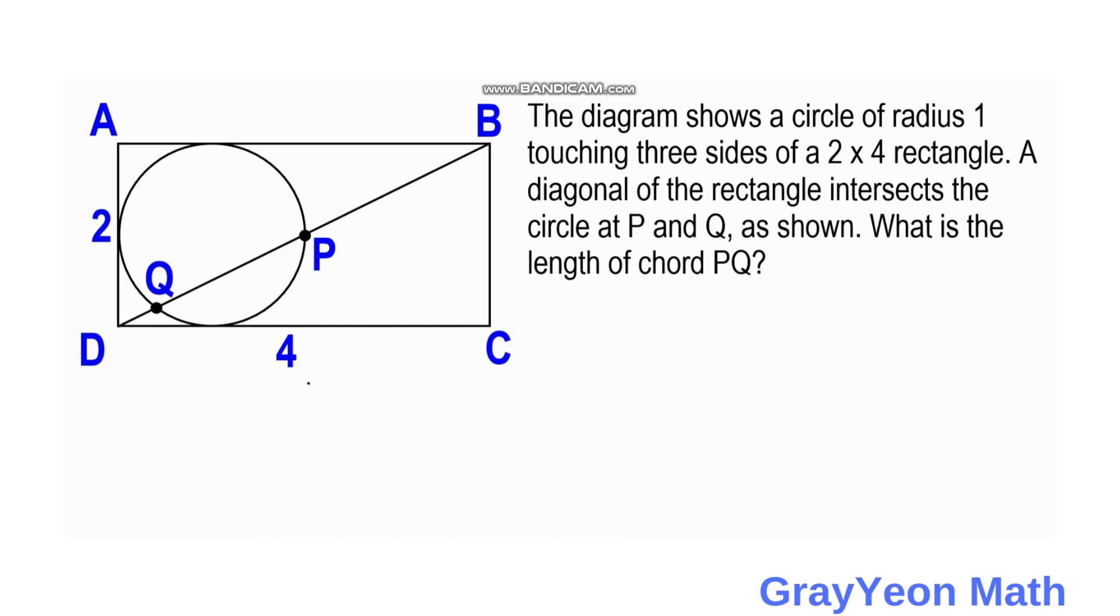First thing we have to do is draw a line from point P towards the left leg of this rectangle. Since the diameter of this circle is 2, and this is actually half of the length of this rectangle, this line cuts through the center of the diagonal, which is also a point of tangency in this circle.